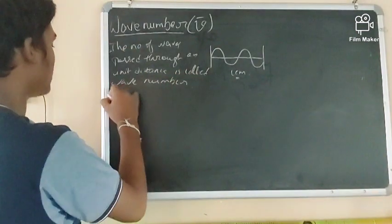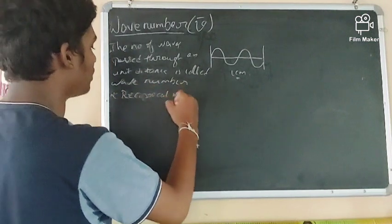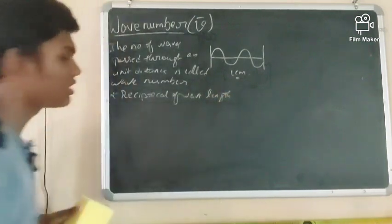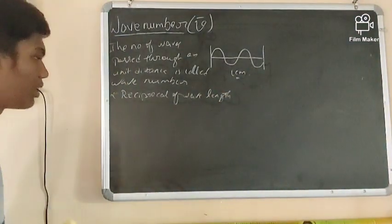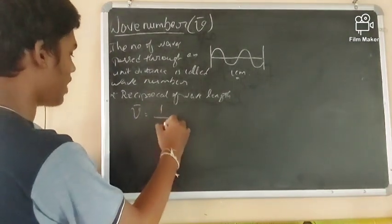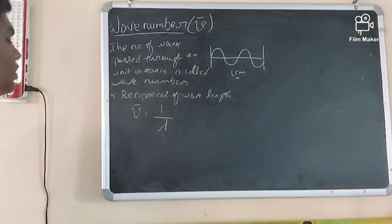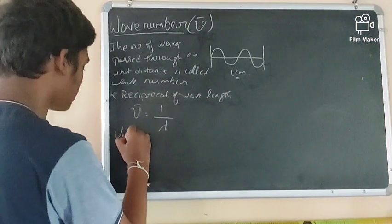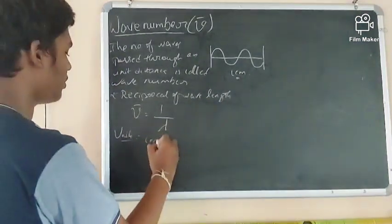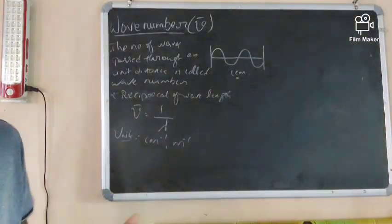Wave number is basically the reciprocal of wavelength. It is denoted by nu-bar (ν̄), and we can write ν̄ = 1/λ because it is the reciprocal of wavelength. Its units are centimeter inverse (cm⁻¹) or meter inverse (m⁻¹).